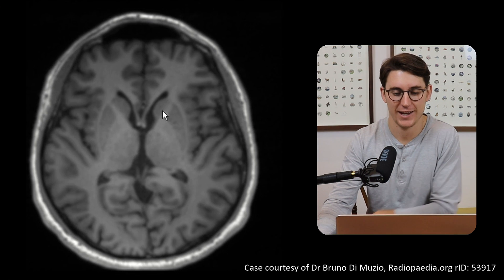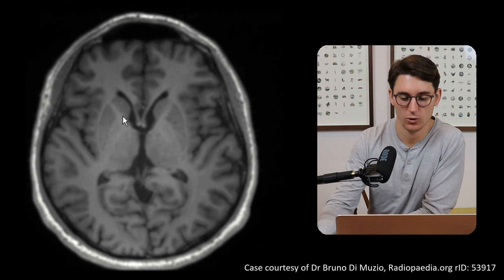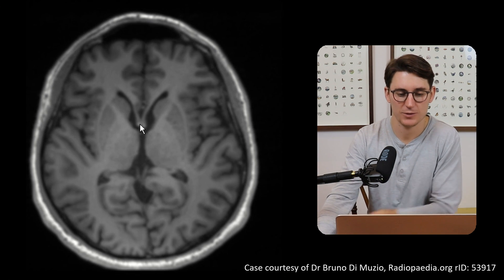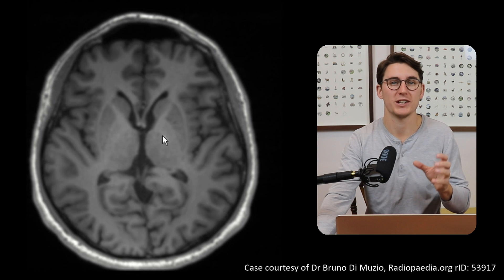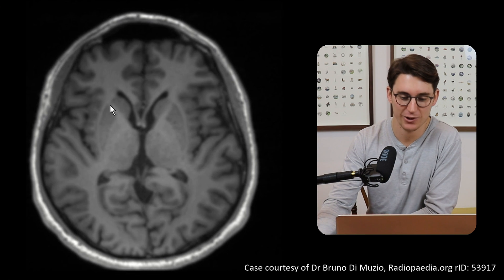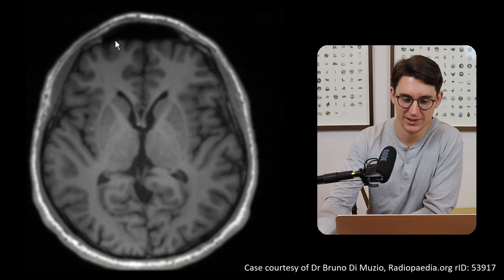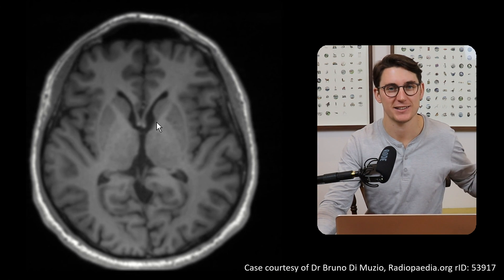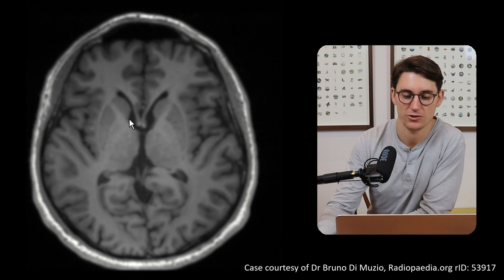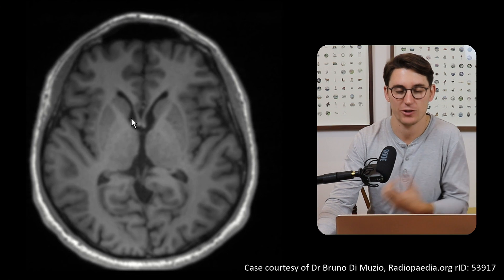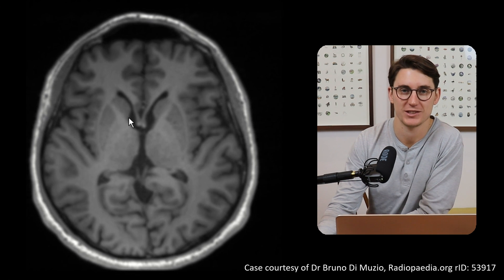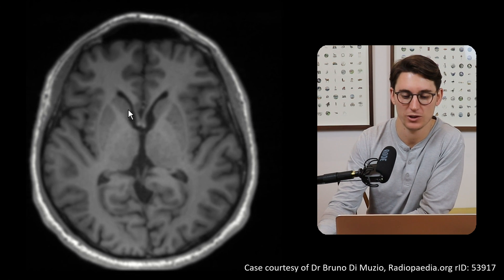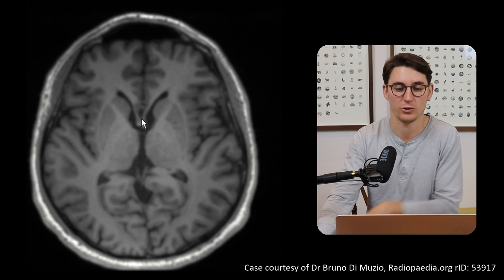Let's start by looking at the caudate nucleus. It's more accurate to call these basal nuclei because they're grey matter — the same density as grey matter — and they lie within the CNS. A ganglion technically lies outside of the central nervous system, and a grey matter bundle within the CNS should be called a nucleus. So let's try and call them basal nuclei.